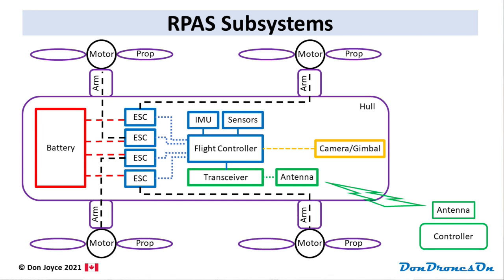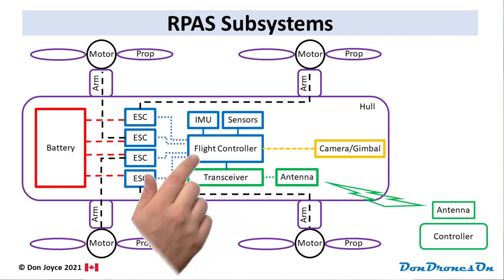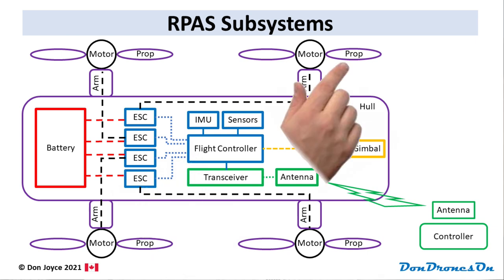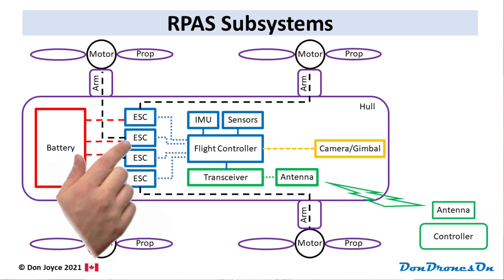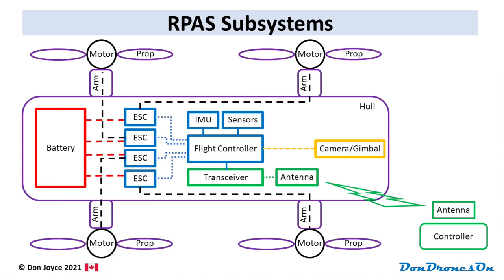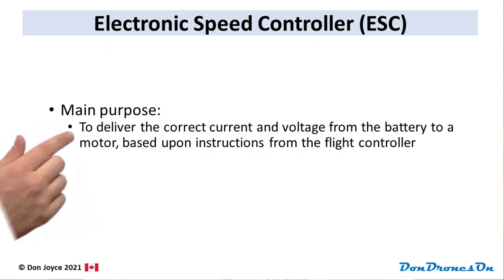These are telltale signs that your IMU needs calibration. Based on all of this information, the flight controller determines which propellers need to do what, and provides appropriate instructions to those electronic speed controllers, or ESCs. There's one ESC per motor. The ESC's job is to deliver exactly the right current and voltage from the battery to the motor, such that it rotates at the correct RPM.